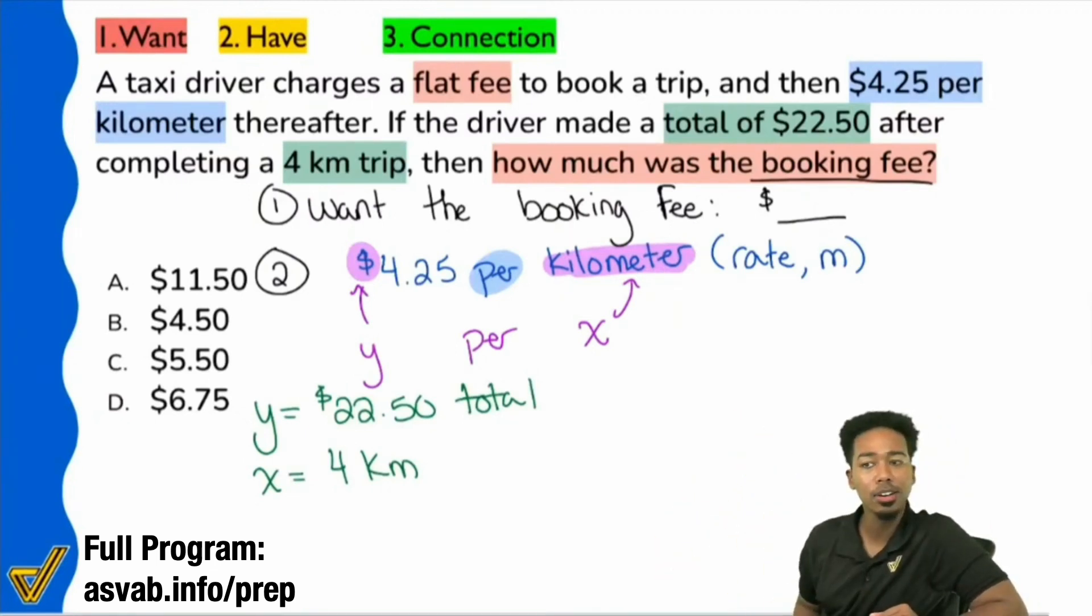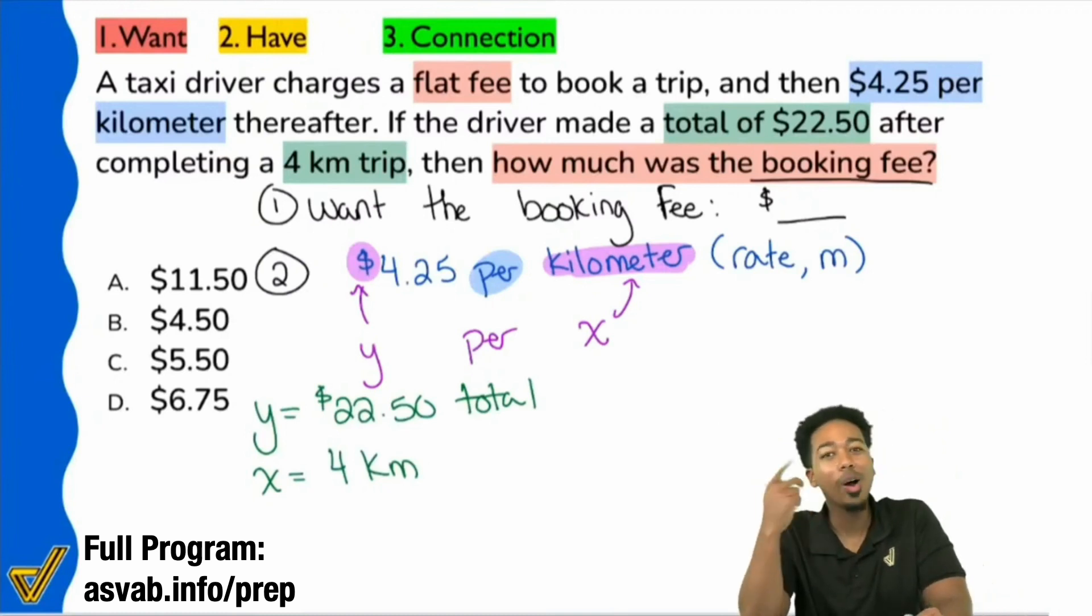We know that we figured out what our input and output are, the X and the Y. We have our rate right there. So what must we be looking for in that flat fee, everybody? What does that flat fee represent then? Yeah, it's going to be your B. The flat fee is going to be the beginning amount.